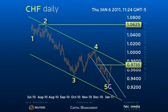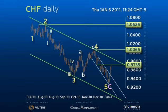The simple zigzag upside correction to 100.65 ended at the 4th wave to satisfy the Elliott rule of alternation, albeit relatively shallow.